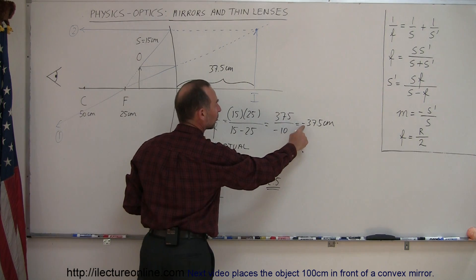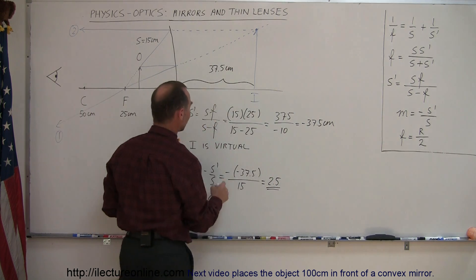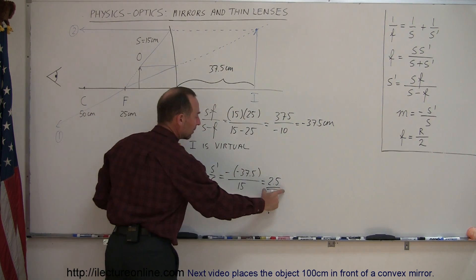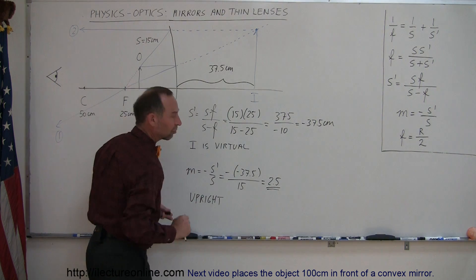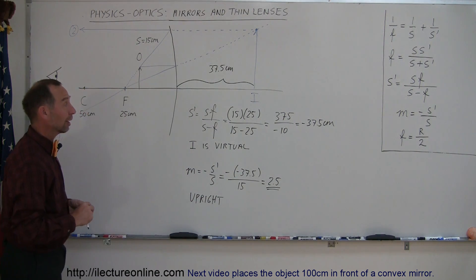And there's the answers. We have the location of the image. It's behind the mirror, 37 and a half centimeters. It therefore is virtual. The magnification is two and a half times the original object. And it is upright because the magnification is positive. And that's how you do that problem.